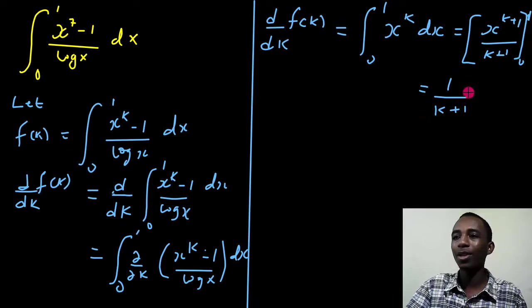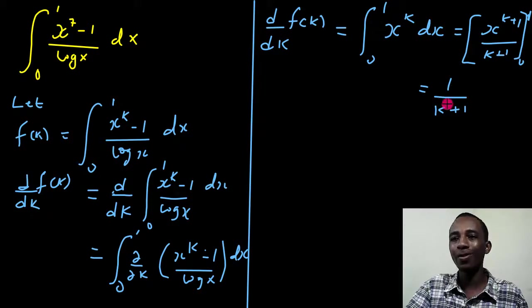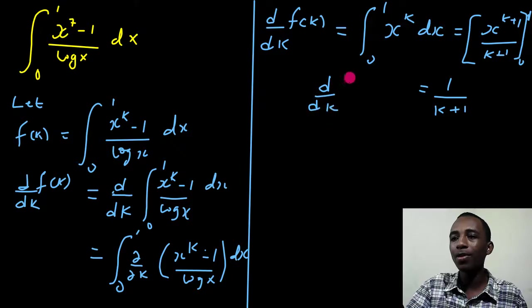So that turns out to be the integral of 1, sorry, that turns out to be 1 over k plus 1. And this, remember, represents the derivative with respect to k of my function f of k.